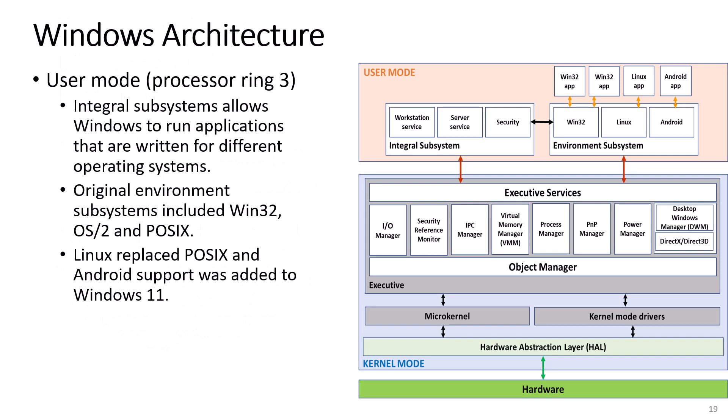User mode is in the processor ring 3. The integral subsystem allows Windows to run applications that are written for different operating systems. Original environment subsystems included Win32, OS2, and POSIX. Linux replaced POSIX, and Android support was added to Windows 11.